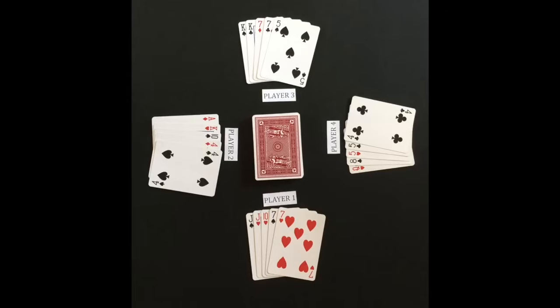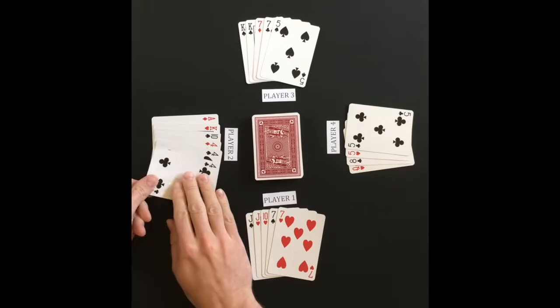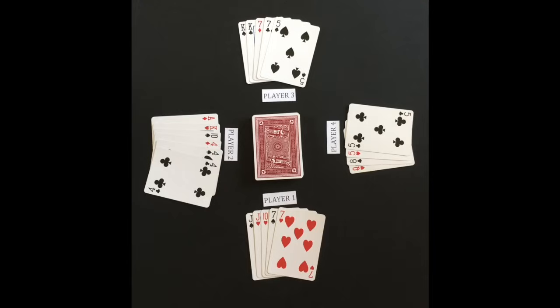Player two will ask player four if he has any fours. Player four must give player two all his fours. When a player receives at least one card from the player asked, that player gets to go again.